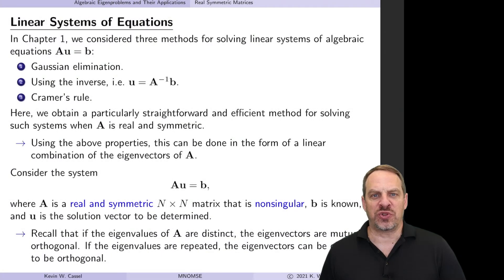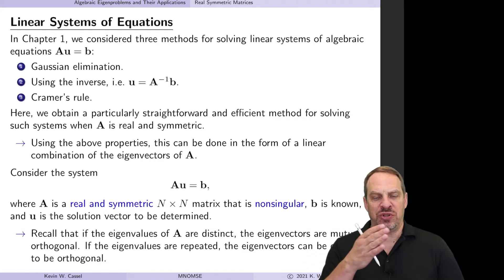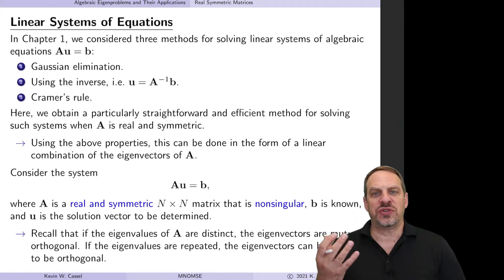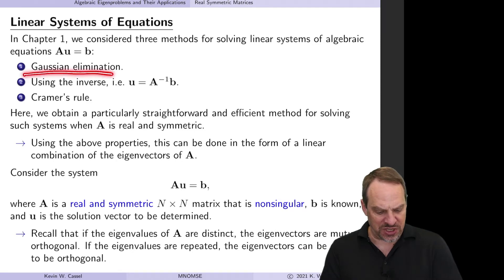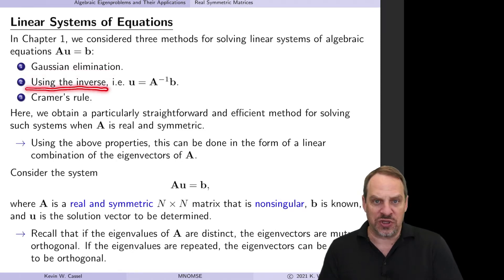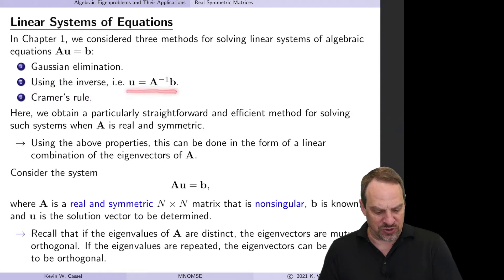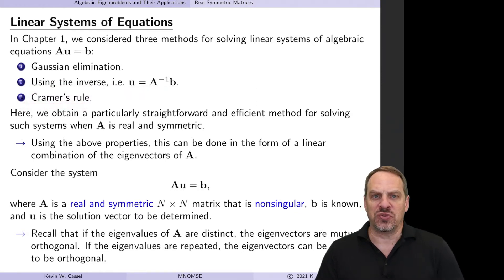In Chapter 1, the focus was on systems of linear algebra equations AU equals B, and we discussed three different ways to solve such systems: Gauss elimination, using the inverse of A so U equals A inverse times B, and Cramer's rule.